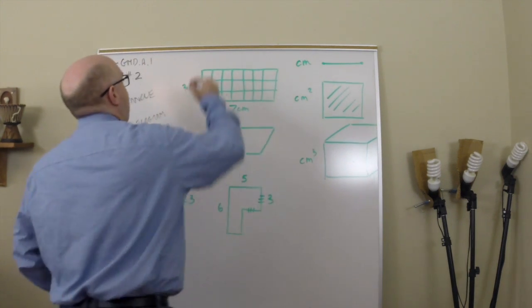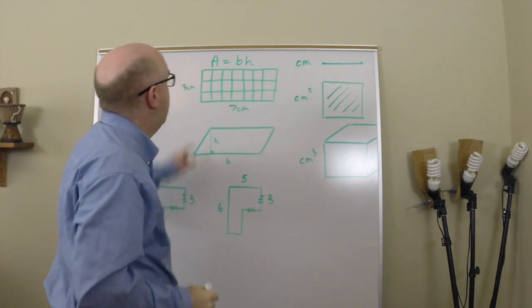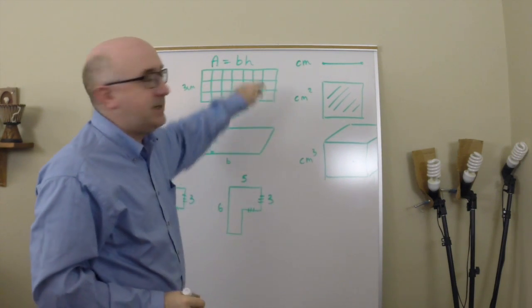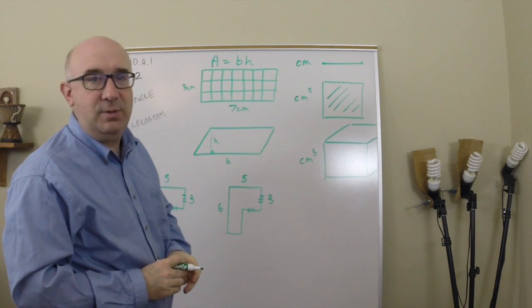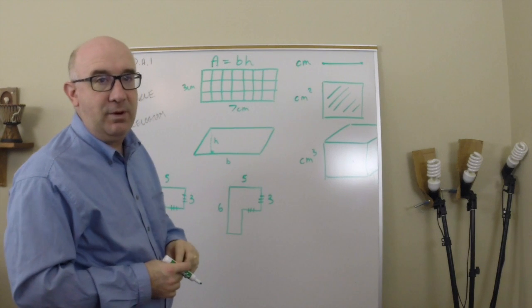So we find out that the area of a rectangle is just what we call base times height, a base, and a height. Base and heights are always perpendicular to each other. Sometimes this is called lengths and widths in this case. I like the more general formula here.